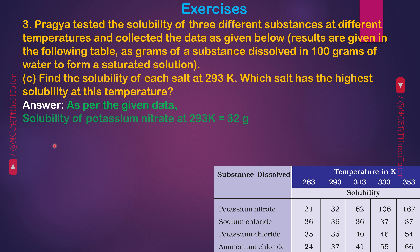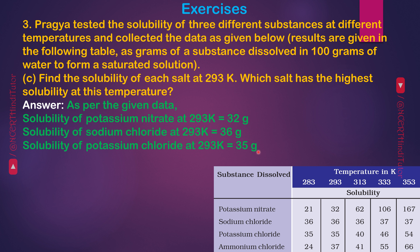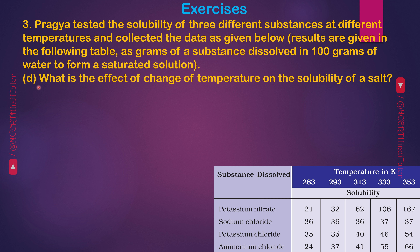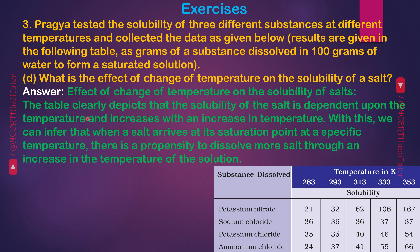C — Find the solubility of each salt at 293 Kelvin. Which salt has the highest solubility? Answer: Solubility of potassium nitrate at 293 K = 32 g; sodium chloride = 36 g; potassium chloride = 35 g; ammonium chloride = 37 g. Ammonium chloride has the highest solubility at 293 Kelvin (37 g). D — Effect of change of temperature on solubility: solubility of a salt increases with an increase in temperature, so more salt can dissolve at higher temperatures.